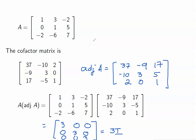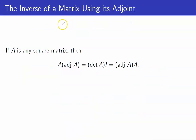We haven't computed the determinant of A — I will leave it up to you to verify that. The result from the previous example can be generalized for any square matrix: the product of A and its adjoint, regardless of the order, gives you the determinant of A times the identity.